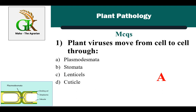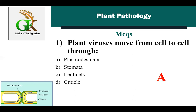Stomata and lenticels are also openings found on different plant parts. Generally stomata are found on leaves, while lenticels are found on plant stems and roots. Additional information: viruses are obligate parasites — those parasites that depend on other organisms for their survival as well as for their multiplication.